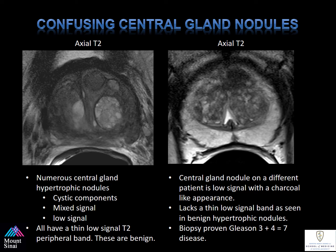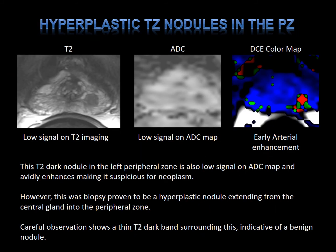Hyperplastic or BPH nodules can occur within the peripheral zone. As seen here on the T2, the ADC, and the DCE color map, notice there's an area of low signal within the left peripheral zone at the level of the apex, with ADC low signal as well as early arterial enhancement on the DCE. It's important to scroll up and down and understand that this left peripheral zone hyperplastic nodule was extending from the central gland into the peripheral zone. Notice there's a thin dark band surrounding the gland. This was biopsied and found to be benign.